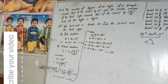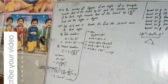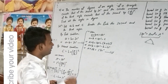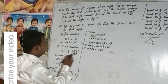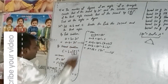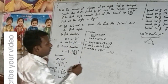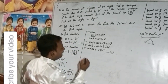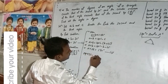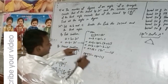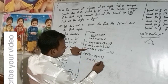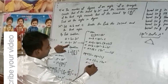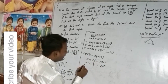Sorry for the interruption due to a power cut. Now continuing: we have equation 1 (A minus B = 20°), equation 2 (C = B + 10°), and equation 3 (A + 2B = 170°). Subtracting equation 1 from equation 3 will give us the value of B.